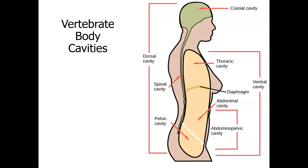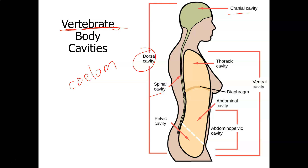Body cavities in vertebrates — and humans are vertebrates. A body cavity is called a coelom, and not all animals have a coelom. We have a dorsal cavity, containing the brain and spinal cord, and a ventral cavity, containing the thoracic cavity. The diaphragm separates the thoracic and abdominal cavities. The abdominopelvic cavity holds the reproductive organs and abdominal organs like the liver, stomach, and intestines.